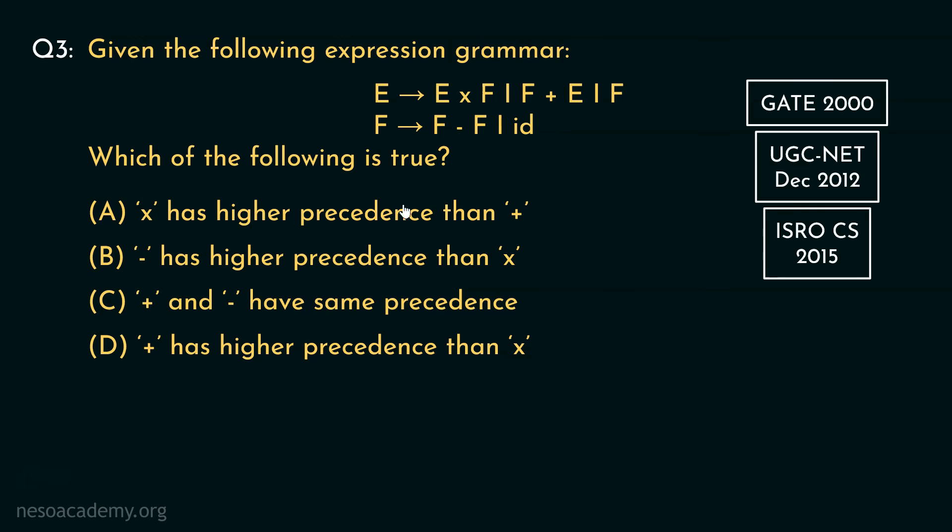Look at the options. A states, into has higher precedence than plus. Well, no. They have the same precedence. Coming to B. Minus has higher precedence than into. Well, yes. It is the correct option. C. Plus and minus have same precedence. No, they do not. Minus has higher precedence. Right? Option D plus has higher precedence than into. This is incorrect as well because they both are of the same precedence. So, the only correct option is B.